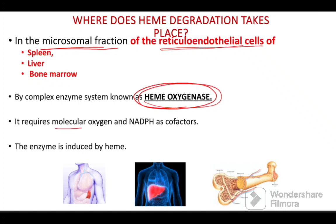The heme oxygenase enzyme system requires molecular oxygen and NADPH as cofactors, and it is induced by heme.